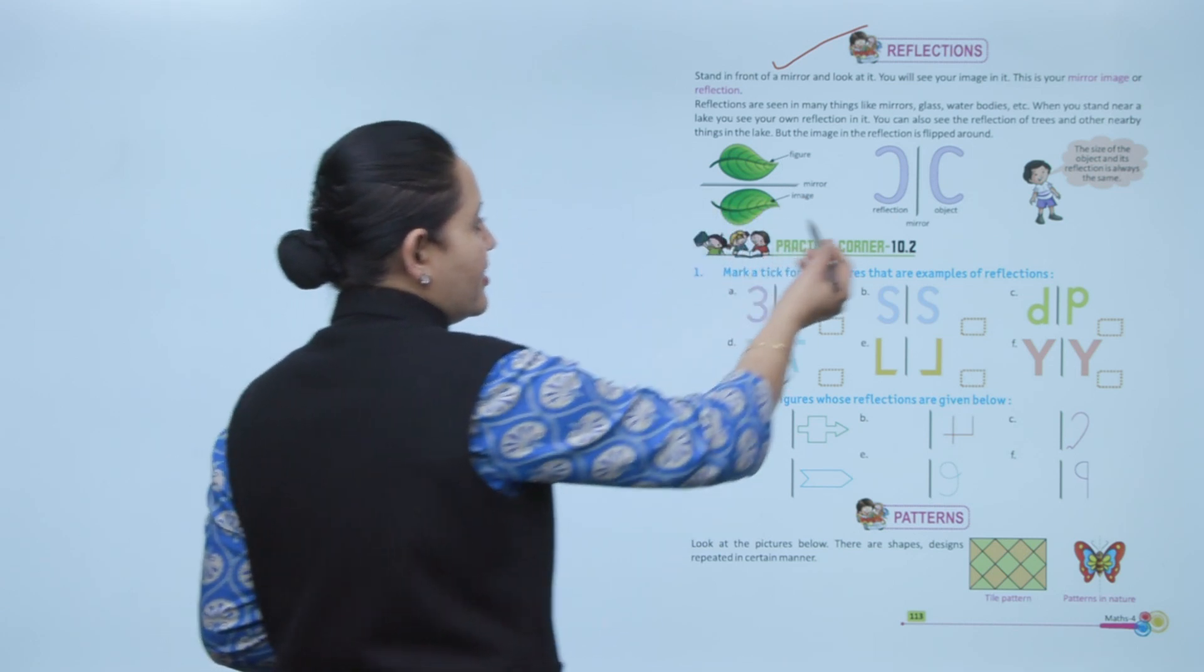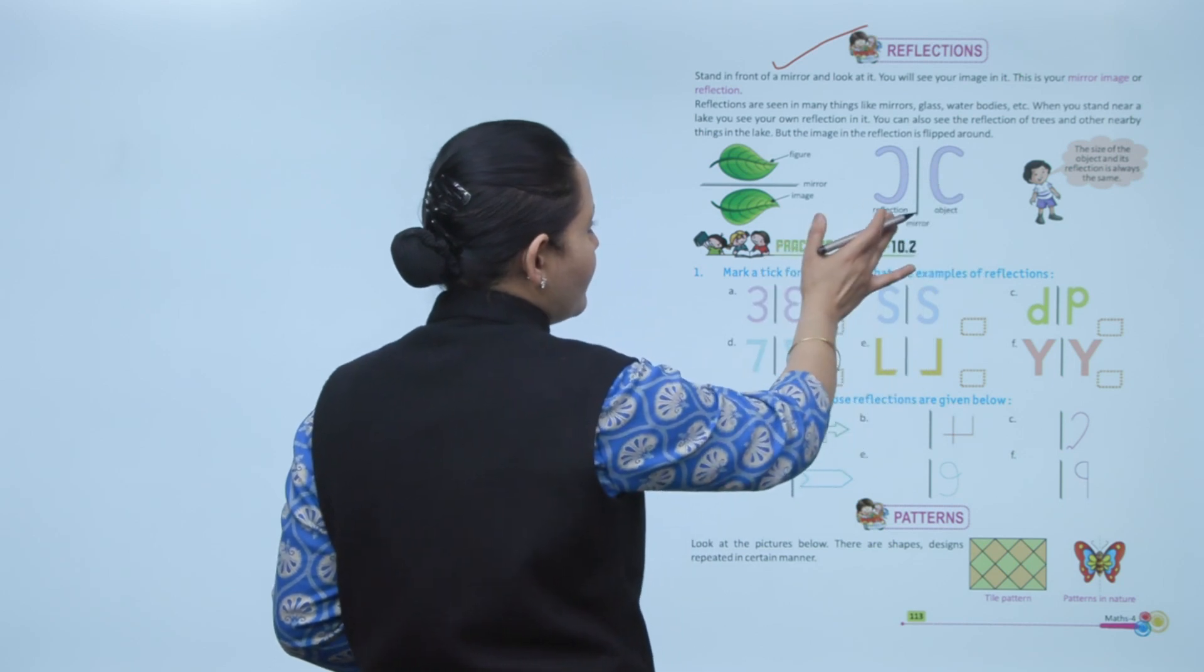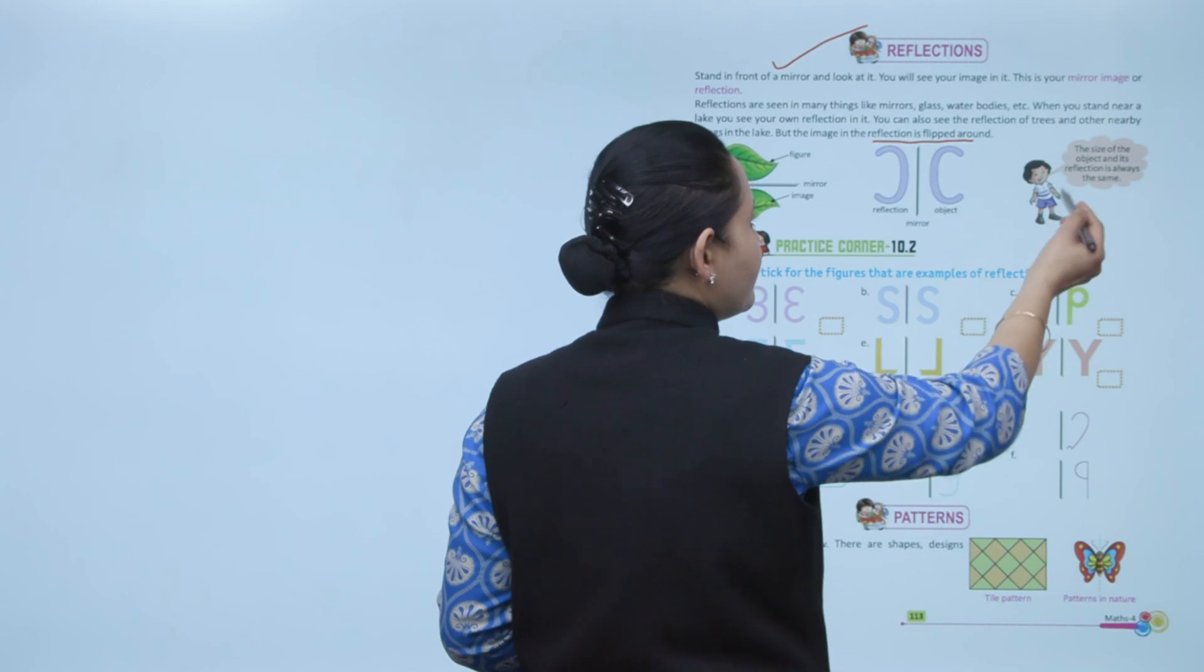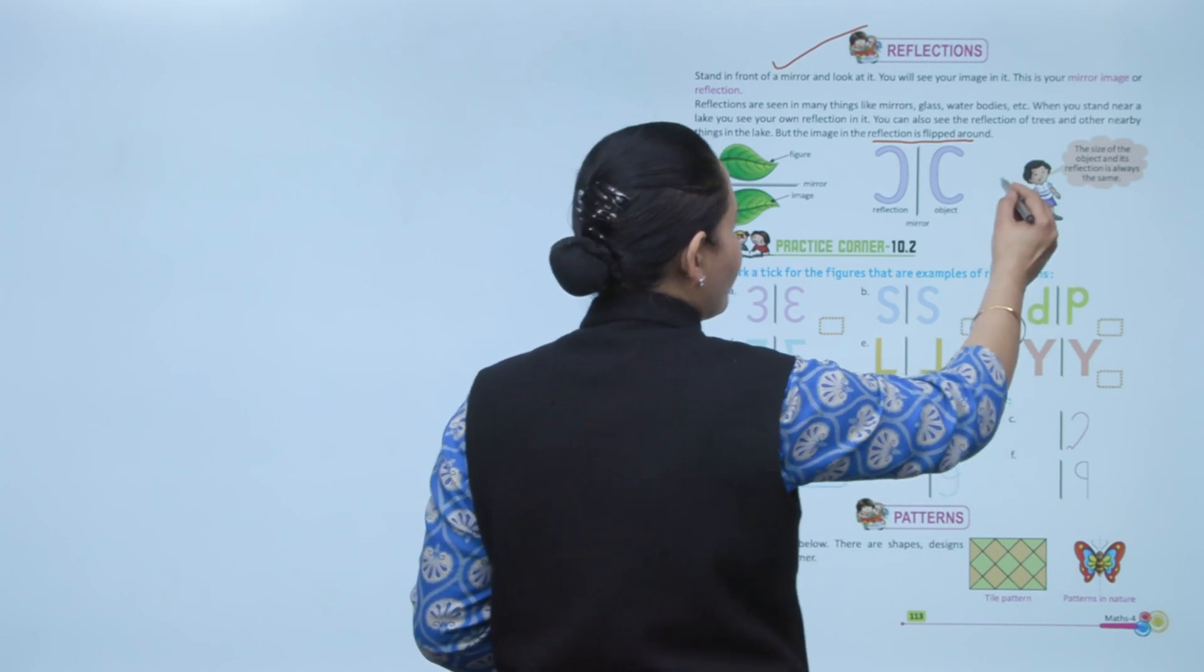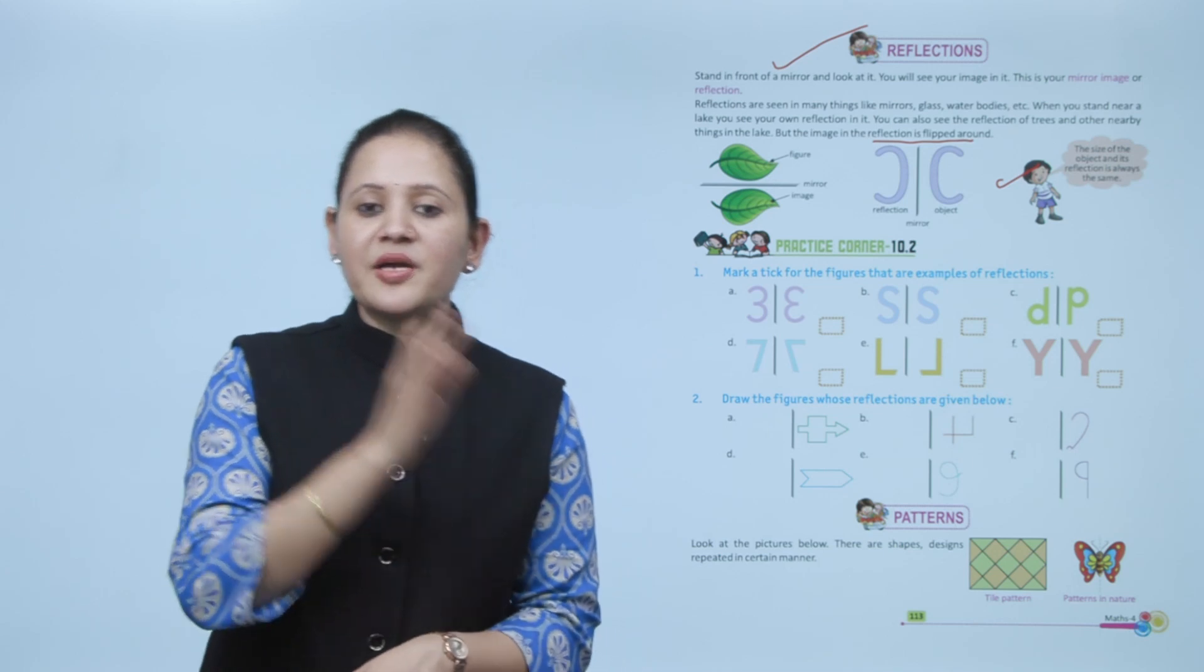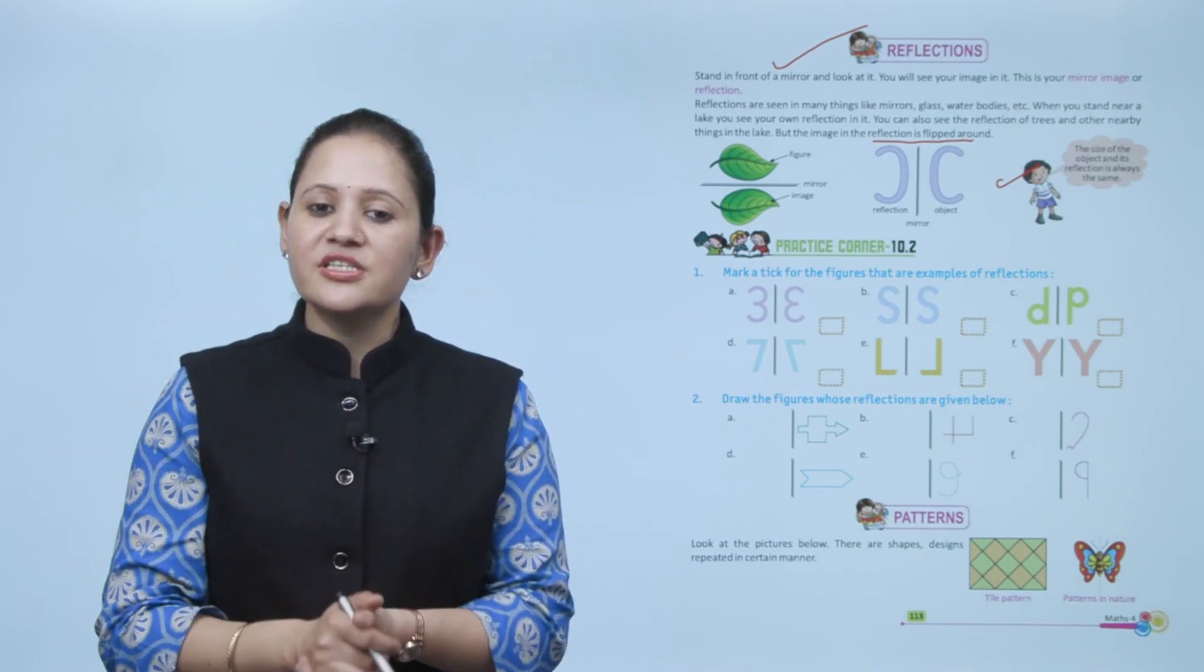Here is the figure, this is the mirror, and this is how the reflection looks like. It's flipped around. The size of the object and its reflection is always the same, but the sides are changed - the left becomes right and right becomes left.